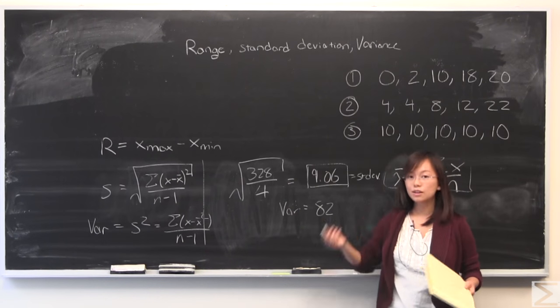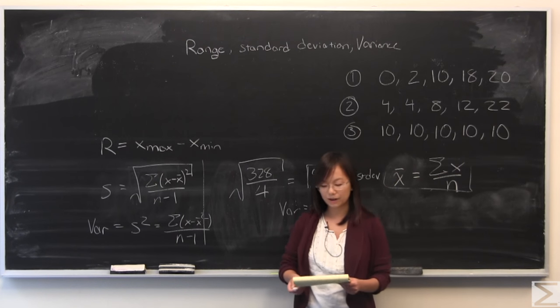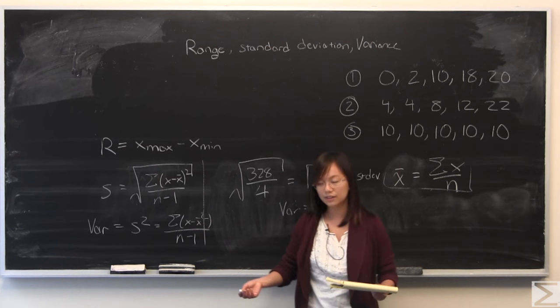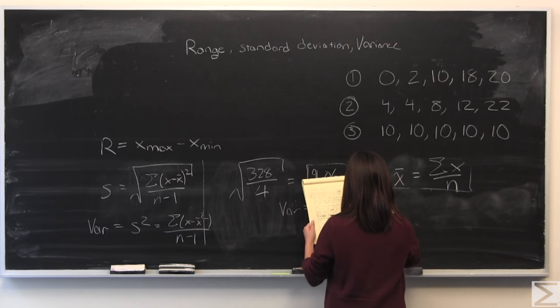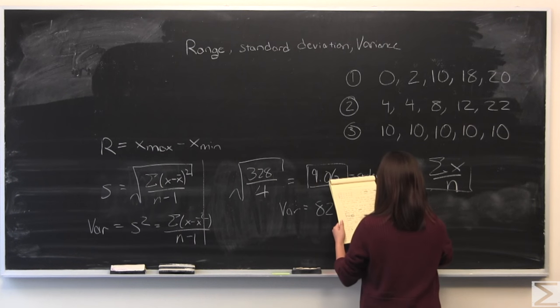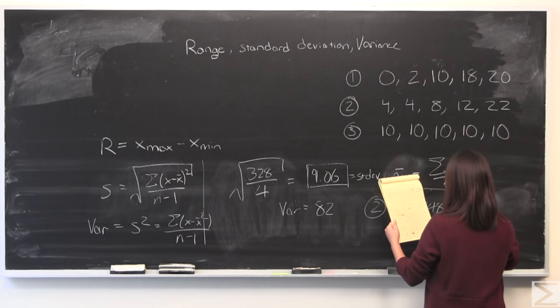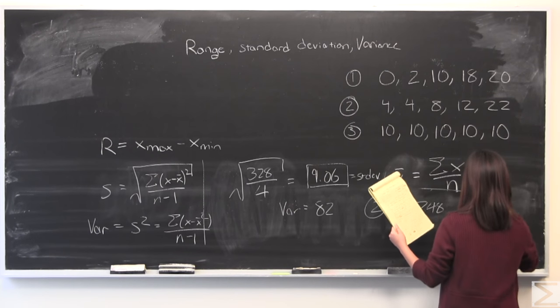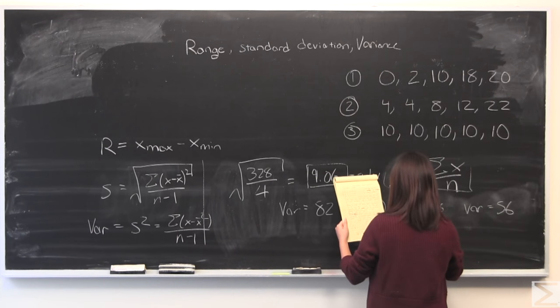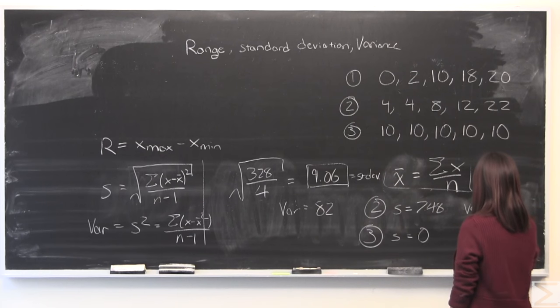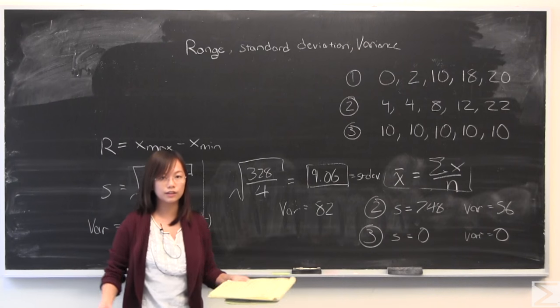These are all both pretty straightforward, pretty simple to calculate. They're very useful, less susceptible to outliers, and give you some pretty good information about your sets. I will give the values of the other two. For set 2, standard deviation equals 7.48 and variance equals 56. For number 3, standard deviation is 0 and variance is also 0.